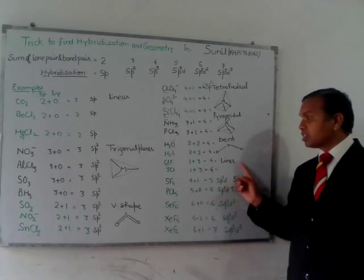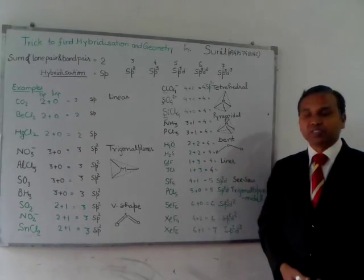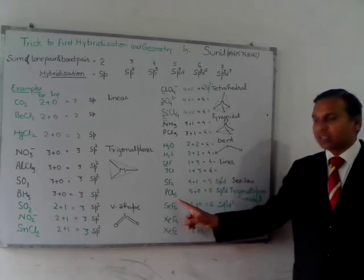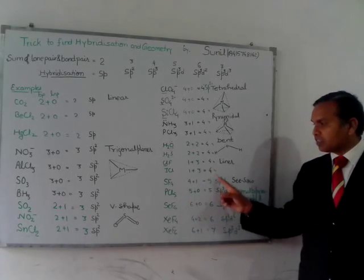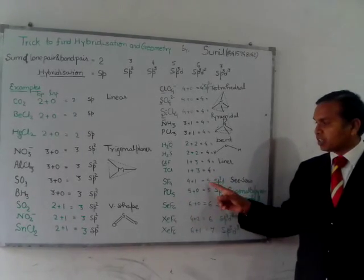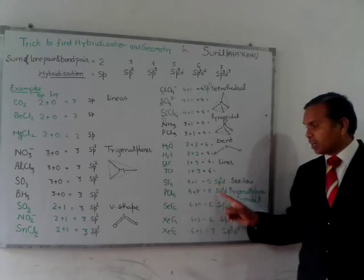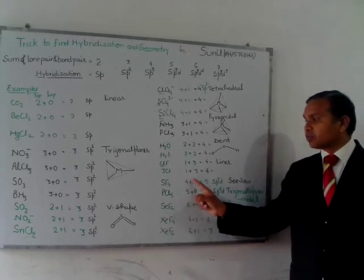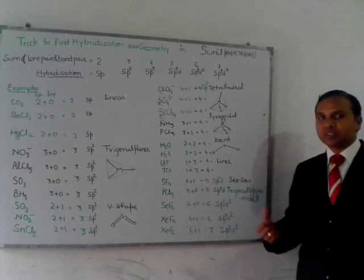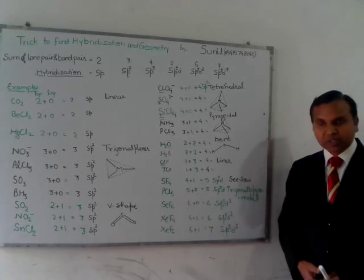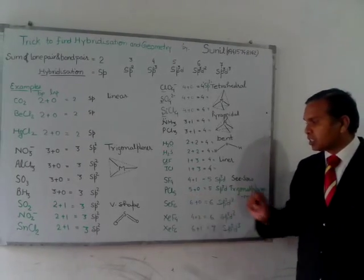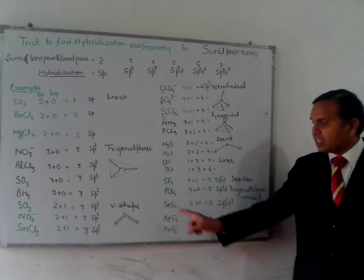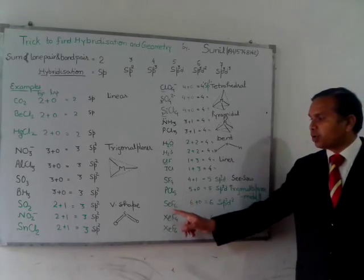Now SF4 and PCl5 - each has the sum of lone pair and bond pair of electron as 5, and the hybridization is sp3d. But in case of SF4, here one lone pair of electron is present, so its geometry is reported as see-saw geometry. And for PCl5, it is trigonal bipyramidal geometry.